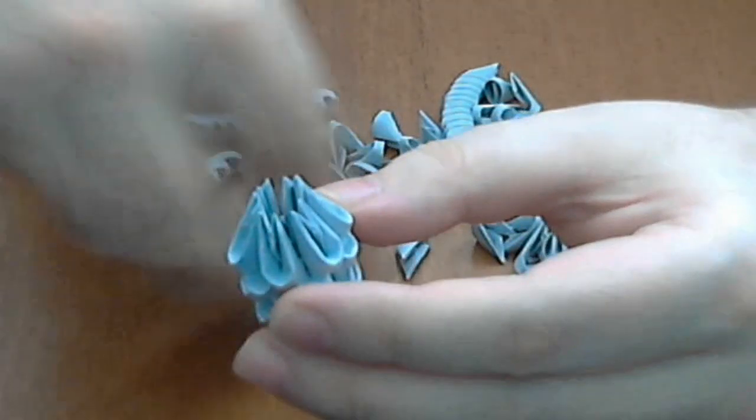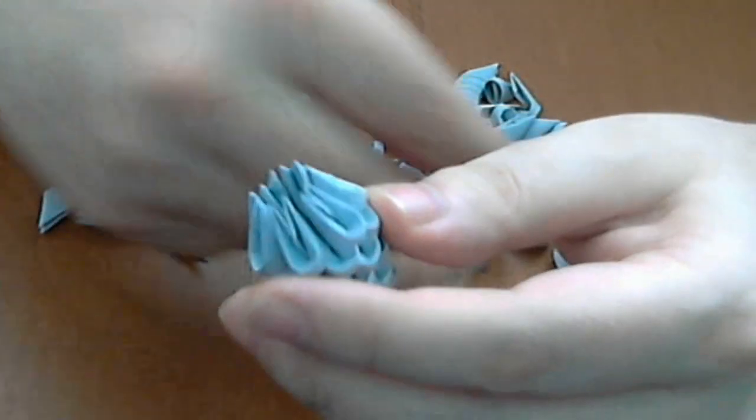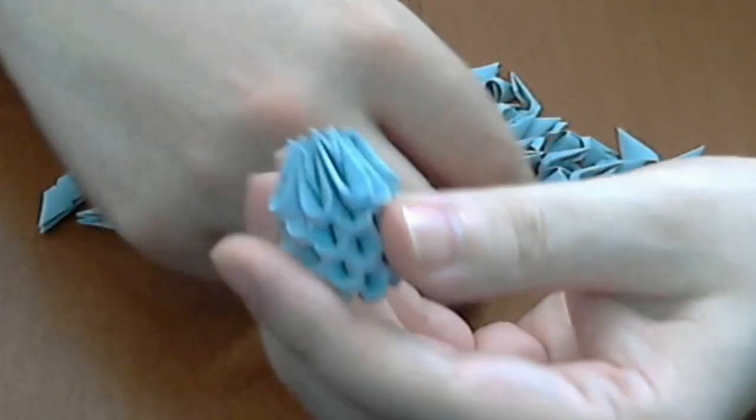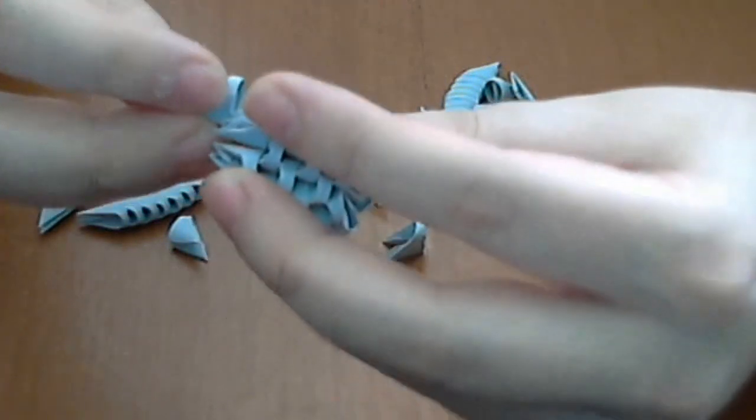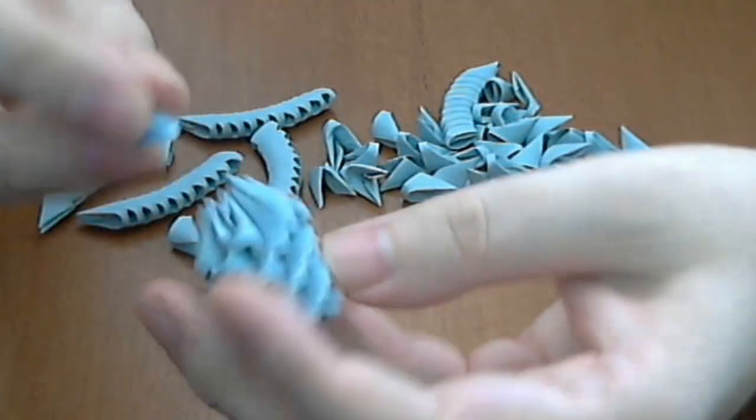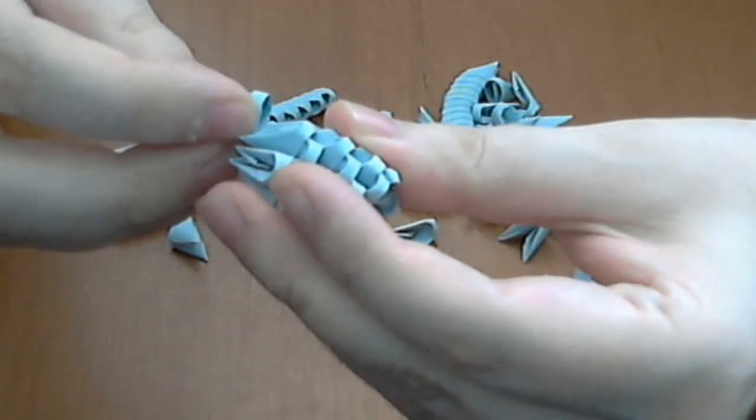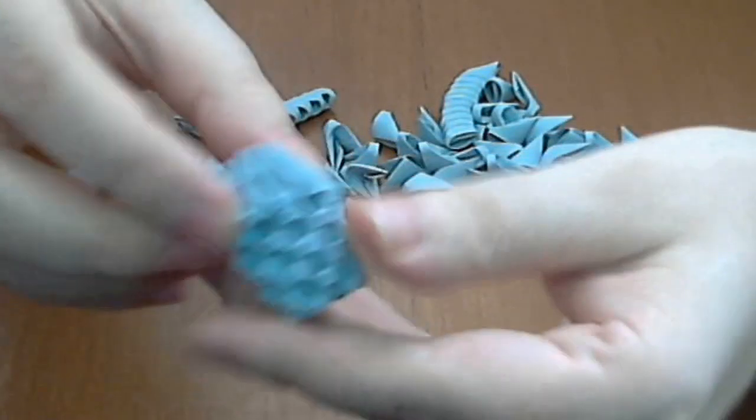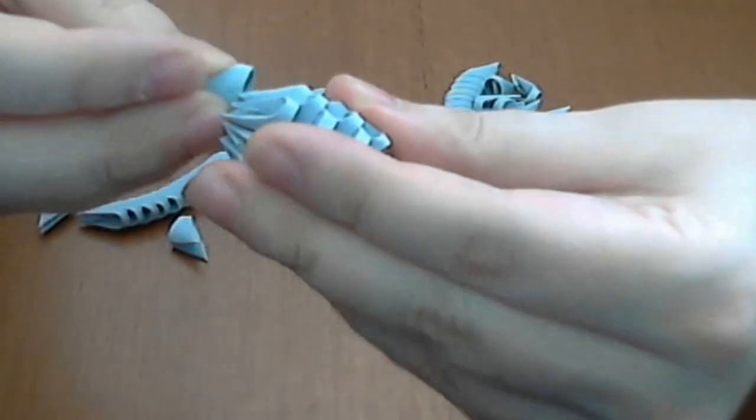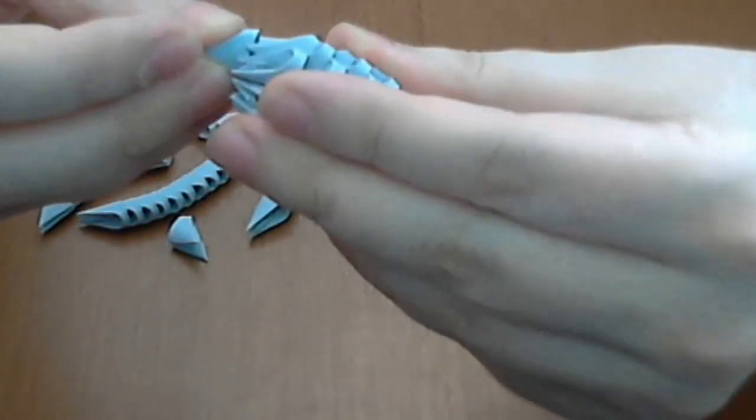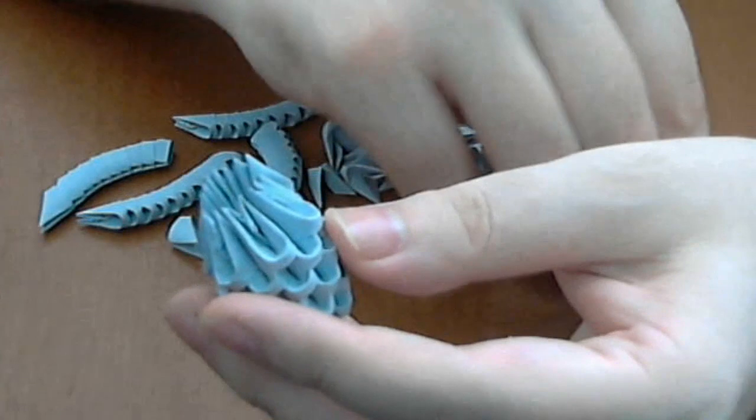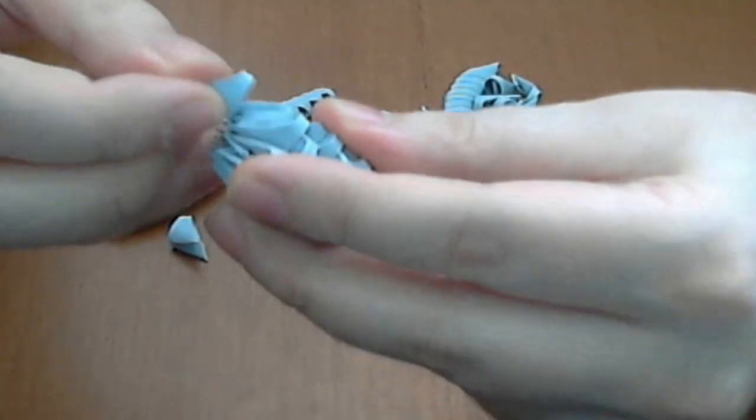And now we will increase the number of the pieces to 12. And this is very simple. We put one piece in every edge. This is not very easy to make. And please remember that this is a difficult model. And you must have a lot of patience to make this model.